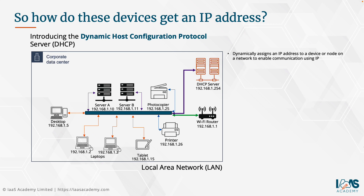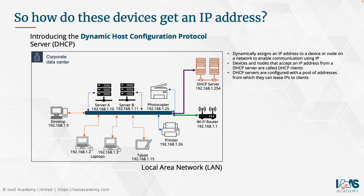A DHCP server dynamically assigns an IP address to a device or node on a network to enable communications using IP. Devices that accept an IP address from a DHCP server are called DHCP clients. DHCP servers are configured with a pool of IP addresses from which they can lease out IPs to those clients. As well as IP information, the DHCP server can also assign other TCP/IP configuration information such as details of DNS servers or gateway addresses through which they can send network traffic outside of the local area network.